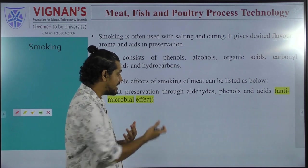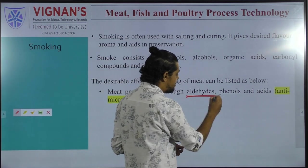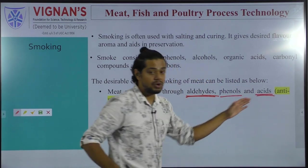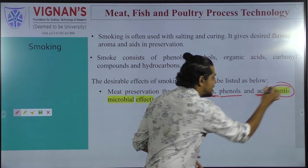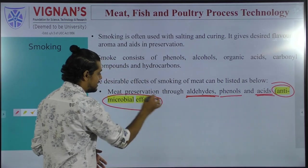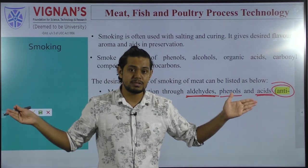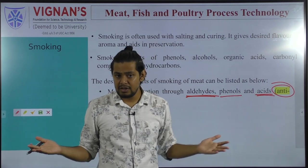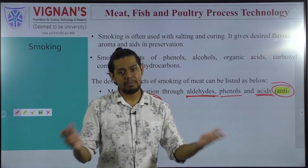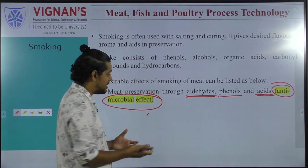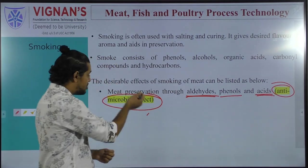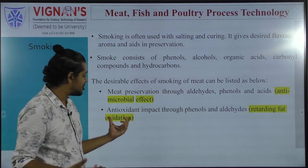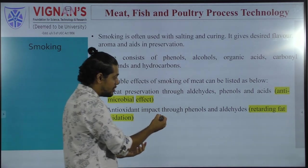The first desirable effect is meat preservation through aldehydes, phenols, and acids, which have anti-microbial effects. Grilling liberates byproducts such as aldehydes, phenols, and acids which exhibit broad-spectrum antimicrobial activity against bacteria, yeast, and mold.